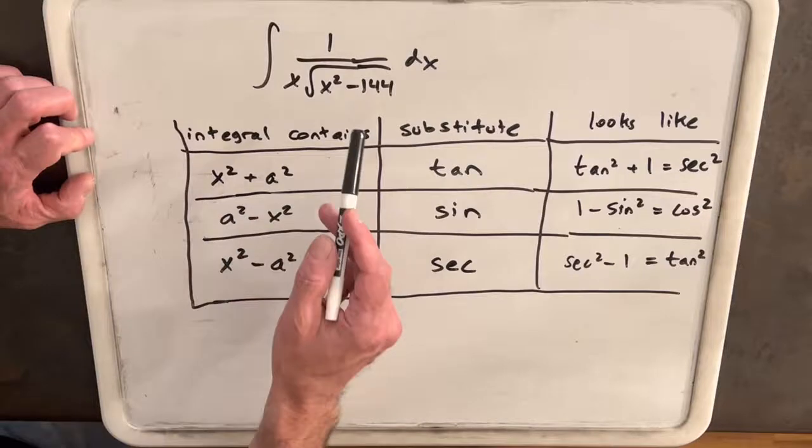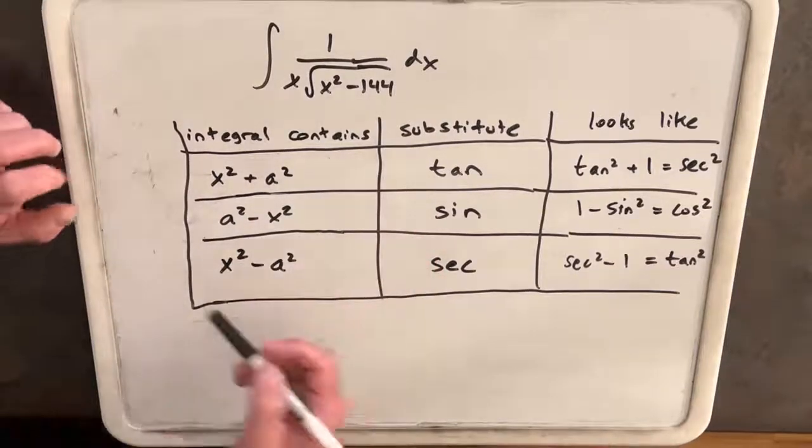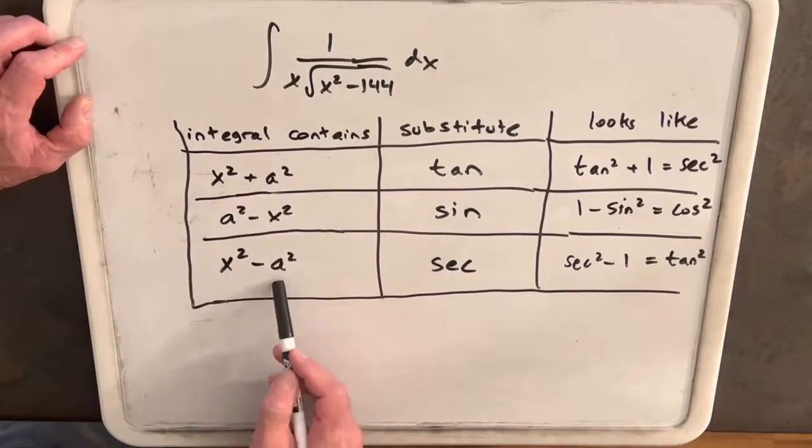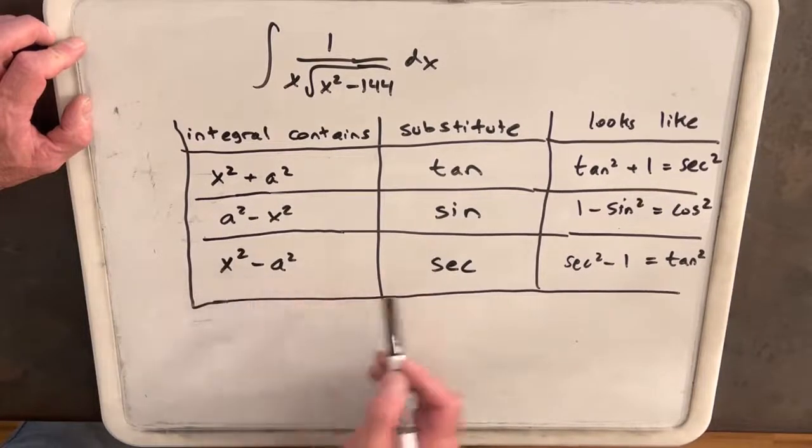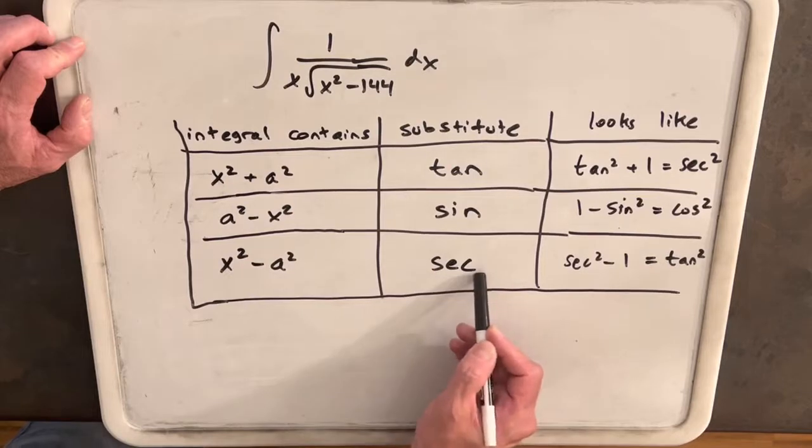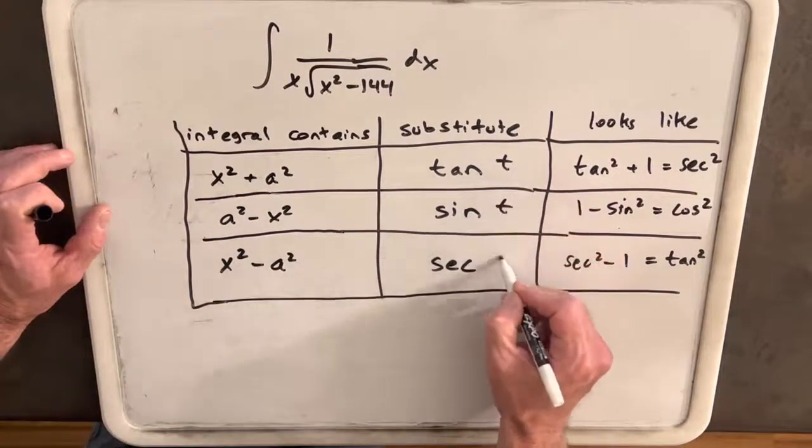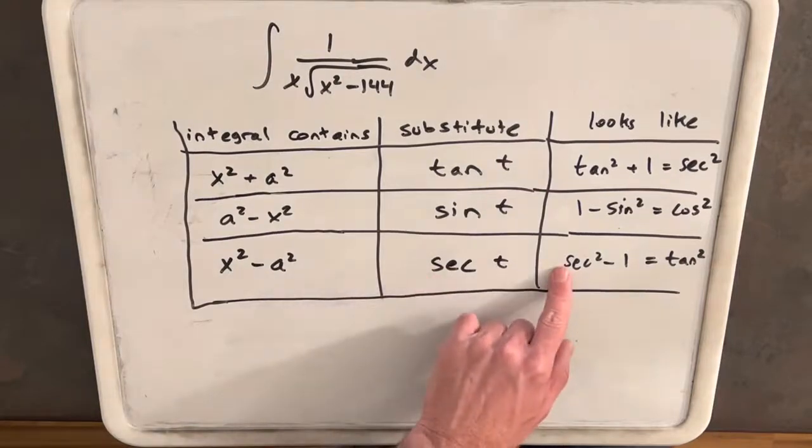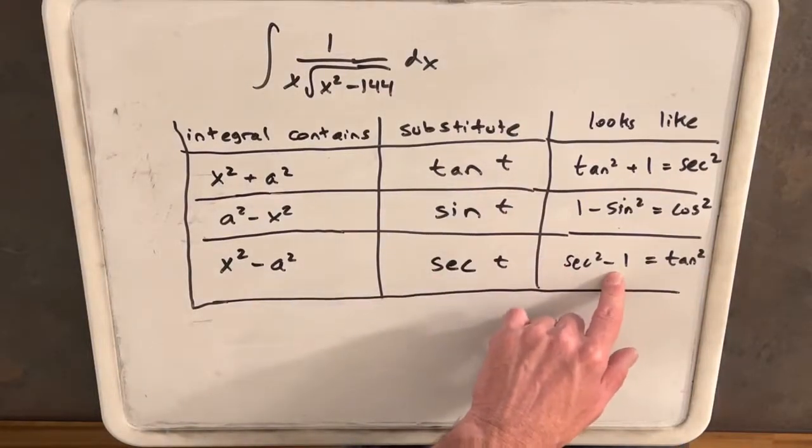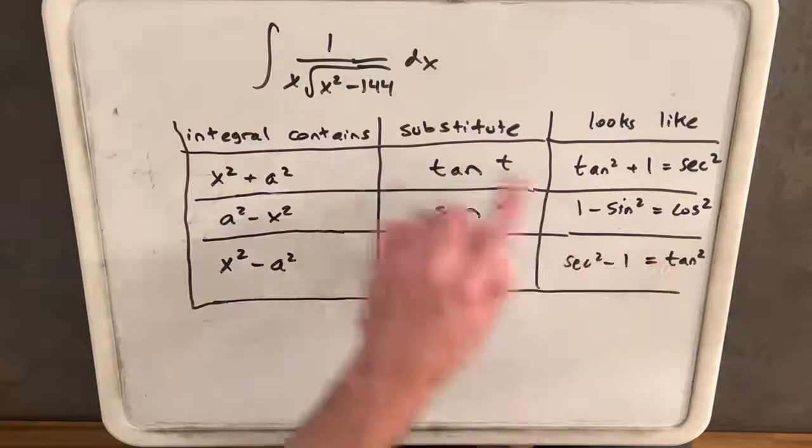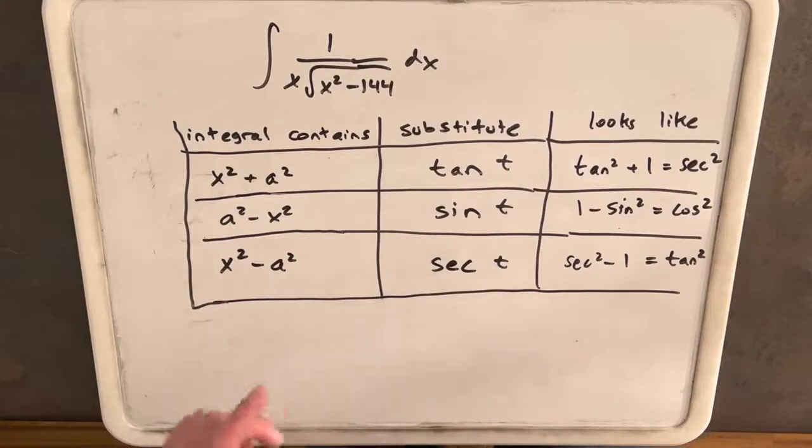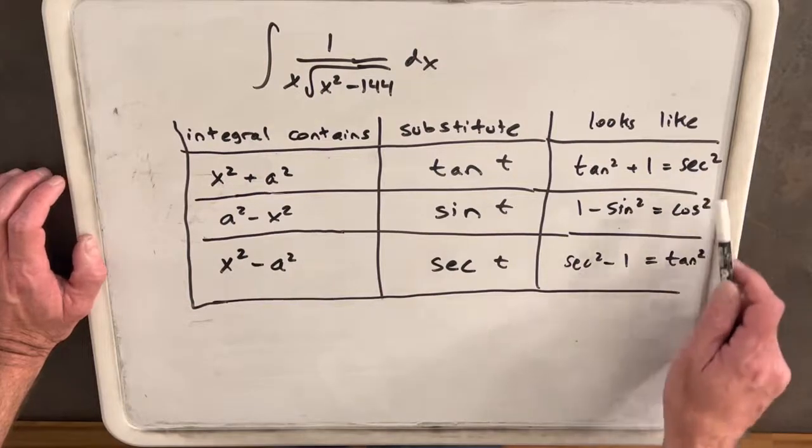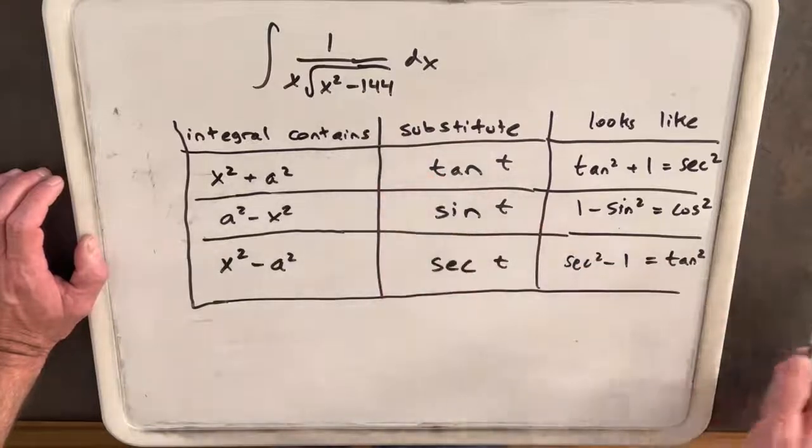This last case looks like the integral we have. 144 can be written as 12 squared, so we have x squared minus a squared. We're going to try to substitute x with secant of some other variable, theta or t. When we do that substitution, we can use the identity secant squared minus 1 equals tan squared. When we put tan squared inside a square root, it simplifies nicely.